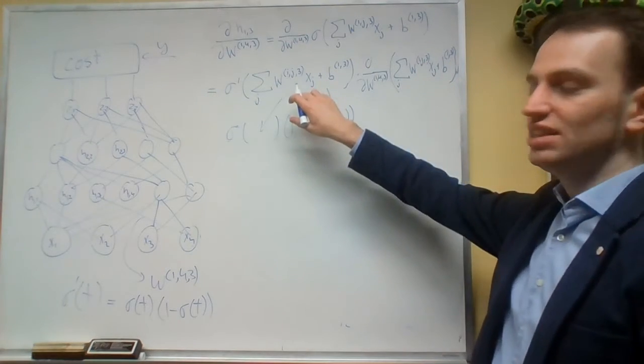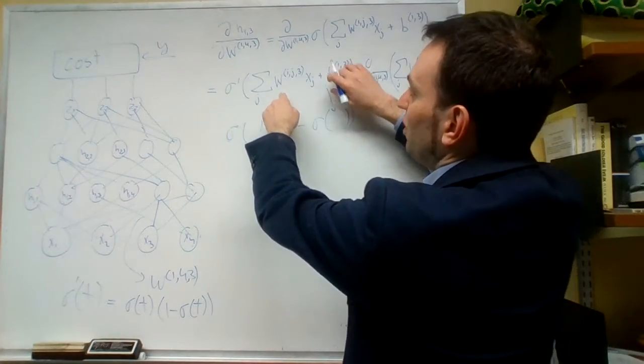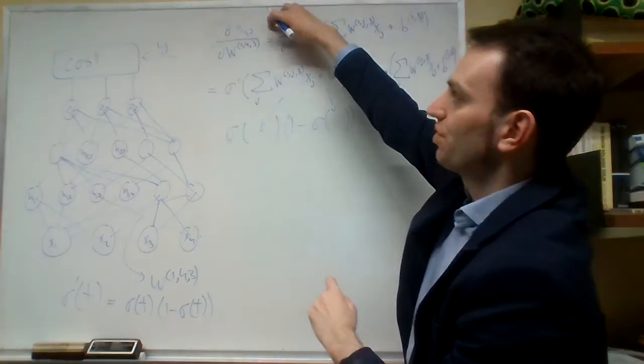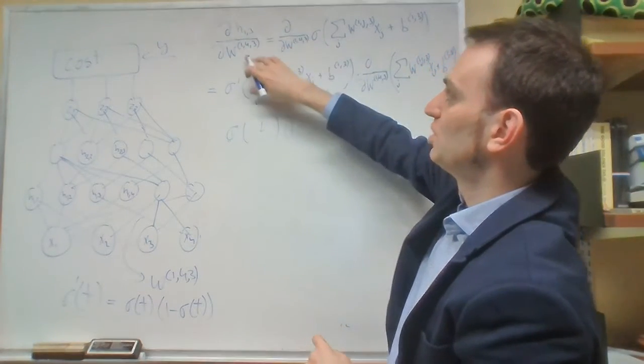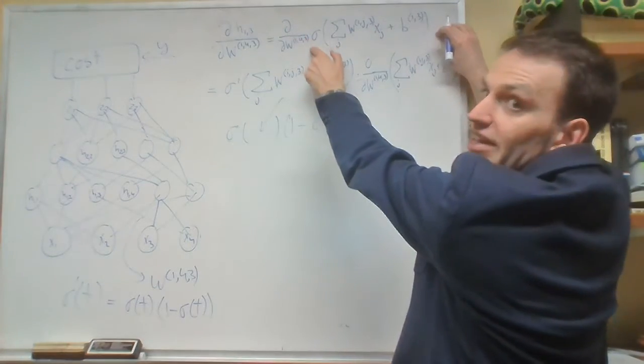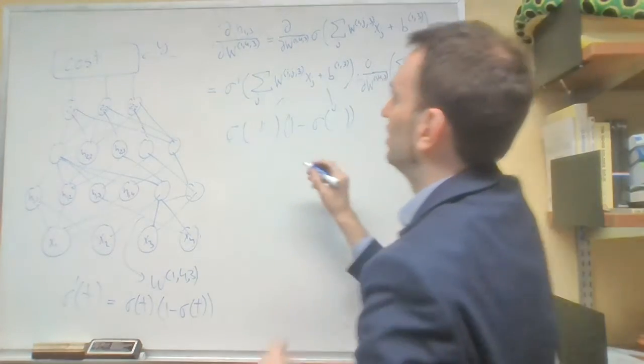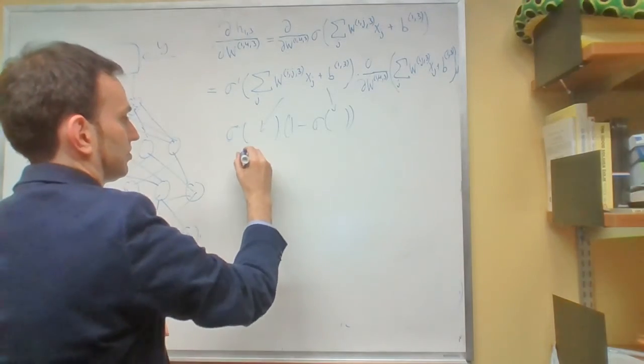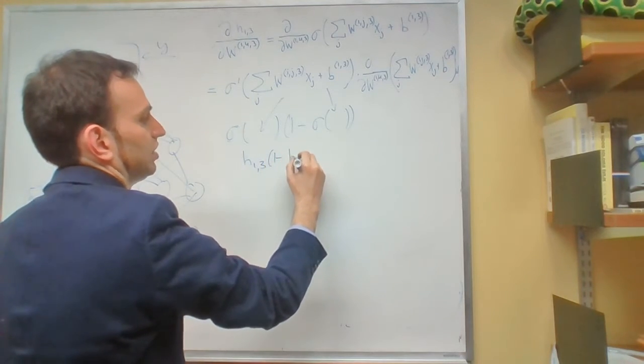Now what does that mean? Well, sigma of this guy, this is just the definition of h13. Remember, what you're doing is we're computing d by dw143 of h13. h13 is just this guy. So this means that this is really going to be h13 times 1 minus h13.